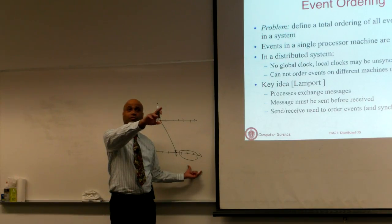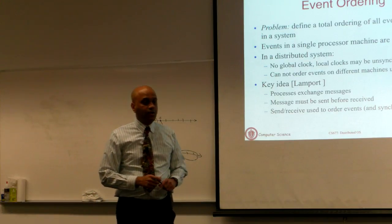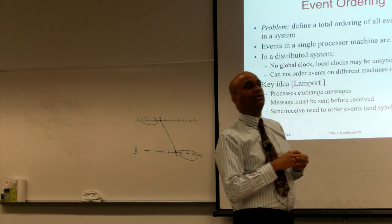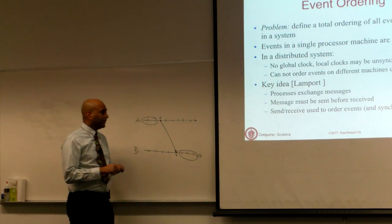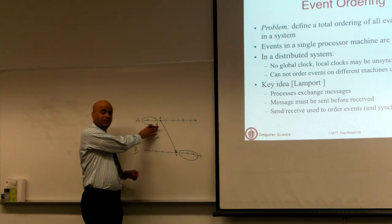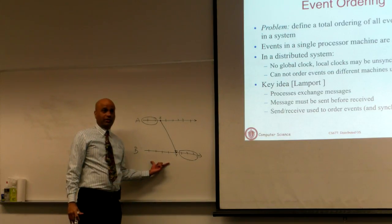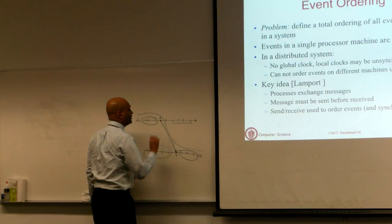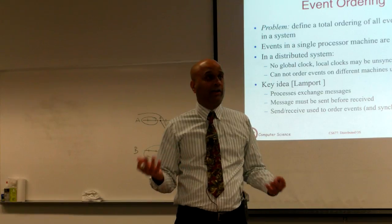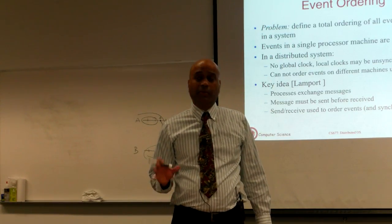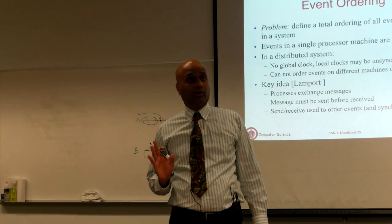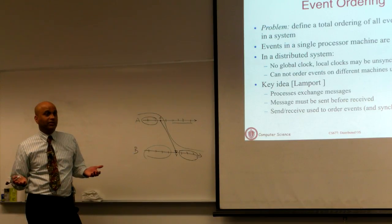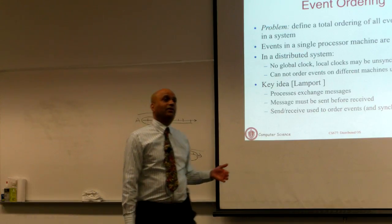Without using any timestamp or clock synchronization, just by a single message sent from one machine to another, we have actually ordered events that occurred on that machine prior to the send, and all events that occur on the receiving machine after the receipt. This is a partial ordering. All the events before the send and before the receipt cannot be ordered with respect to one another — those are unordered events. With additional message exchange, maybe we can find additional ordering, but with a single message exchange, that's all we can do.